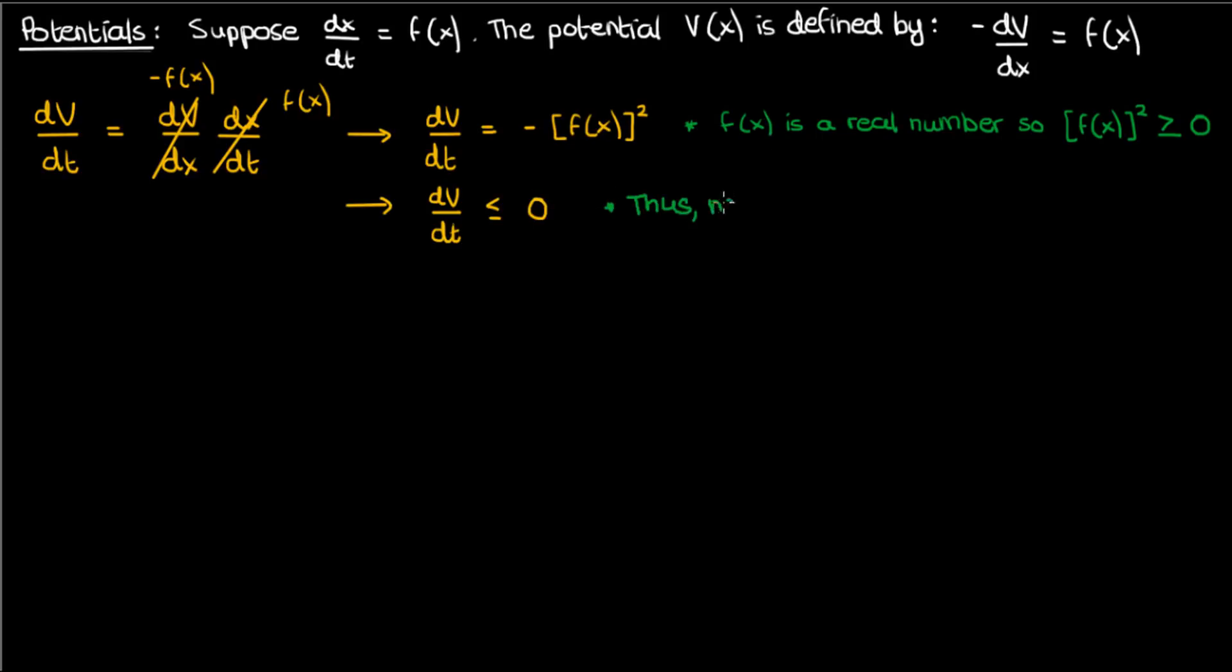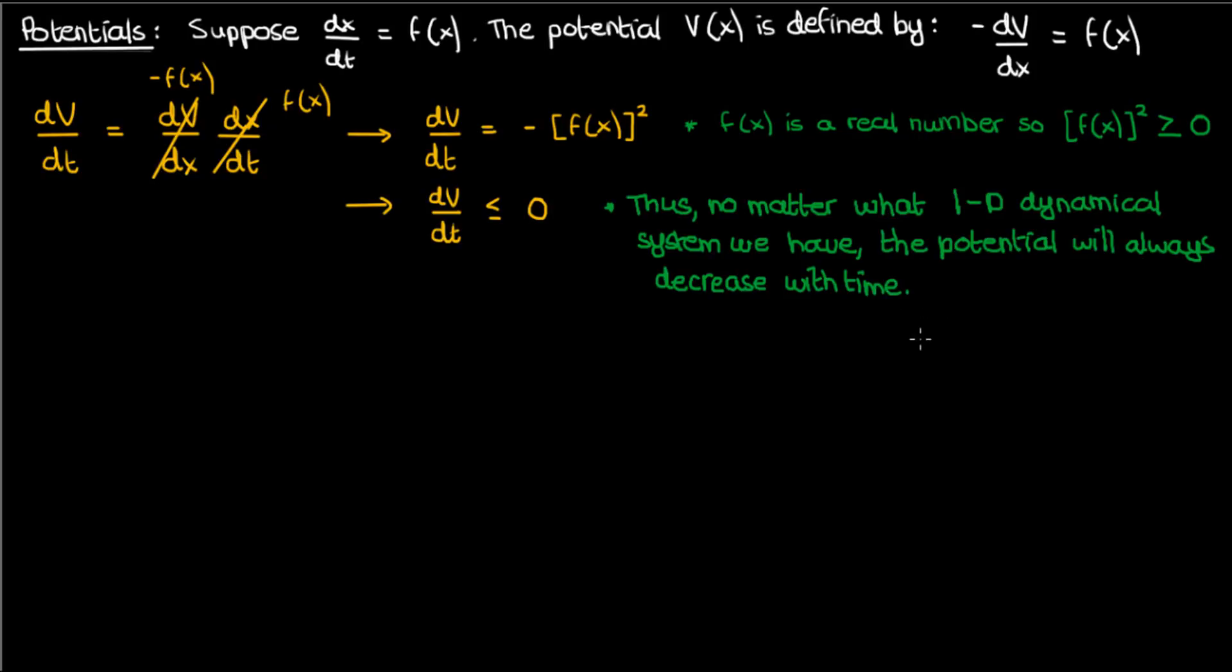What does this mean? Well, it means that no matter what one-dimensional system we have, no matter what differential equation is used to describe that system, the potential will always decrease with time, so there's a tendency for potential to fall in a dynamical system that's one-dimensional.